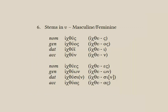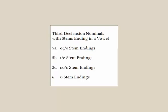Our final 3rd declension pattern has a stem in upsilon, and the stem doesn't shift, and there are no modifications to the basic endings. The only thing you might note is the diaresis in the dative singular, signaling that the iota ending is a separate vowel and not part of a diphthong. So we end with a very easy pattern.